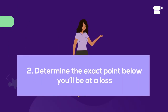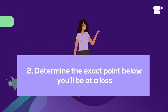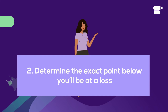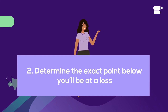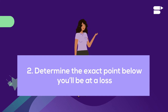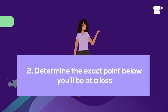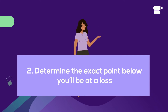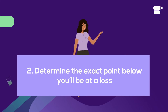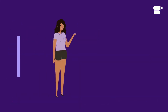Number two, it helps you determine the exact point below which you'll be at a loss. A majority of Amazon sellers end up spending an excessive amount at loss while running PPC campaigns. The Amazon ACoS calculator calculates the exact break-even ACoS below which your PPC ads will be running at a loss.